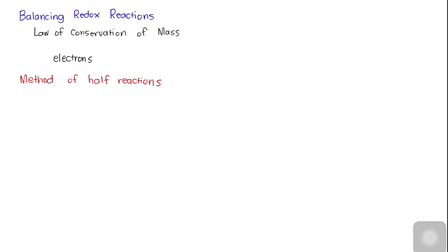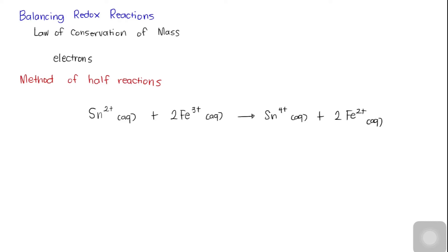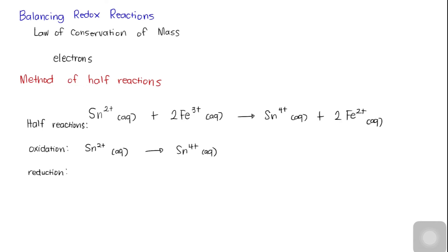Although oxidation and reduction reactions must take place simultaneously, it is often convenient to consider them as separate processes. Let us consider the oxidation of tin 2+ by iron 3+. This reaction can be considered as consisting of two processes: the oxidation of tin 2+ and the reduction of iron 3+. So now we have these two half-reactions.